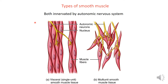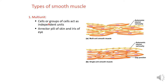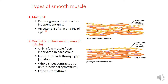There are two types of smooth muscles, both innervated by the autonomic nervous system: single-unit and multi-unit smooth muscle fibers. Single-unit fibers work as one unit or syncytium. Multi-unit smooth muscle fibers act as independent units — examples include the iris muscles (dilator and constrictor pupillae) and the arrector pili muscles of the skin.